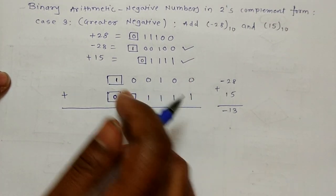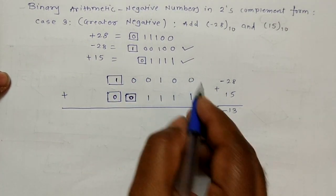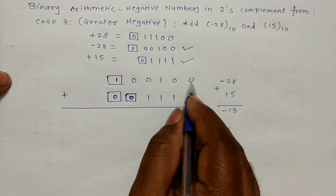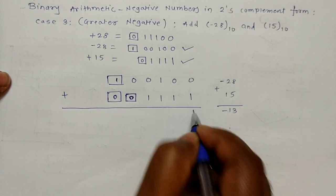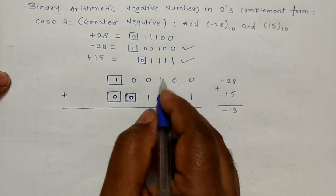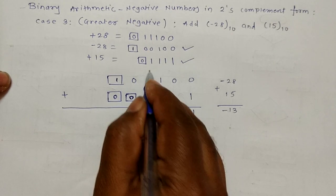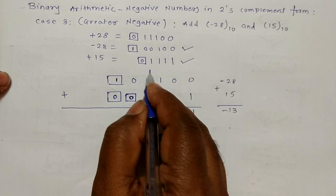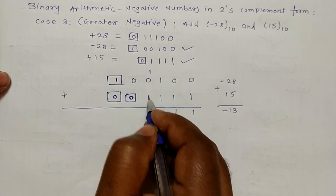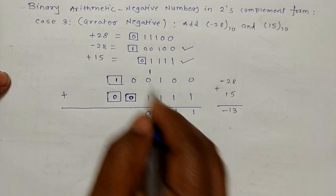Now take the addition of 6-bit plus 6-bit including the sign bit. The steps: 0 plus 1 is 1; 0 plus 1 is 1; 1 plus 1 is 0 with carry 1; 1 plus 0 plus carry 1 gives sum 0 with carry 1.